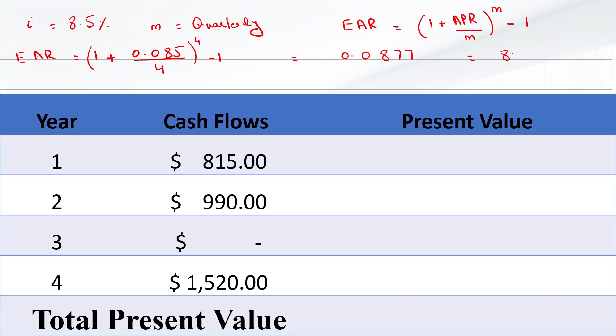So we will use 8.77% interest rate to find the present value of the cash flows. To find the present values, the formula will be present value equals future value divided by 1 plus I raised to power N.